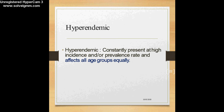There is another term related to endemicity called hyperendemic. The disease is constantly present, but the word 'hyper' is used because this disease has to be present at a higher incidence or prevalence rate — meaning many cases will be occurring — and it will be affecting all age groups equally. Irrespective of age, all people will be affected and the disease will be constantly present in the population.